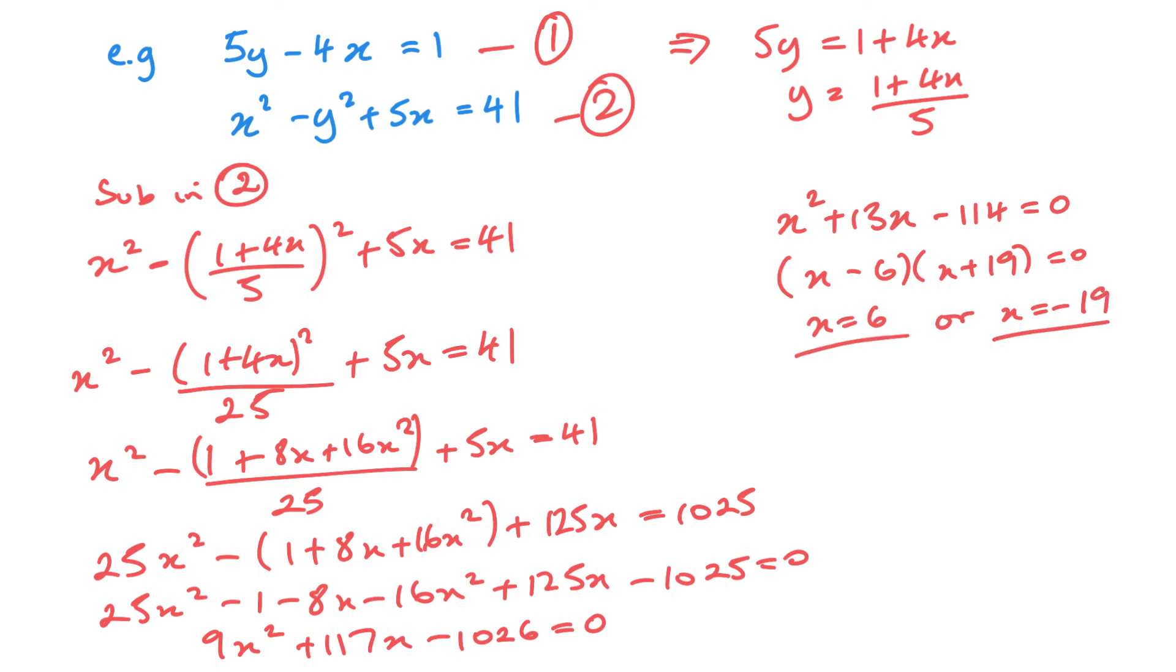Now I've got my x values, I need to find my y values. So I'm going to substitute into equation 1. So we've got 5y minus 4 lots of 6 equals 1. So that's 5y minus 24 equals 1, 5y equals 25, y equals 5. And 5y minus 4 lots of minus 19 equals 1. So 5y plus 76 equals 1, so 5y equals minus 75, y equals minus 15.